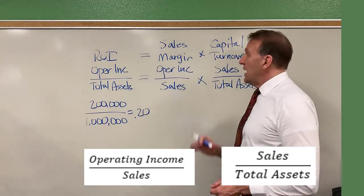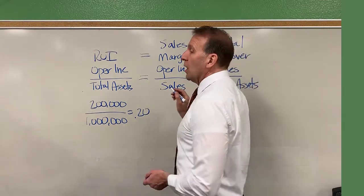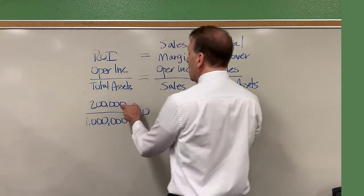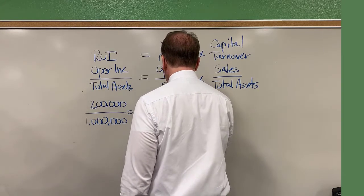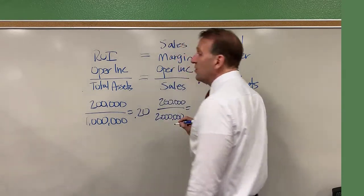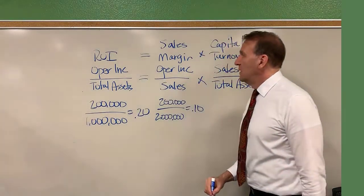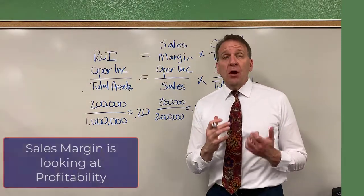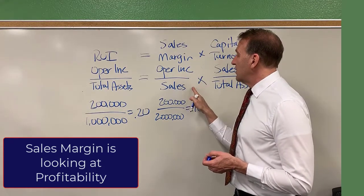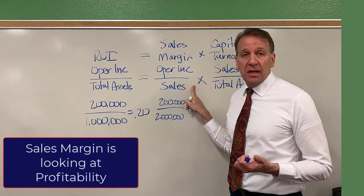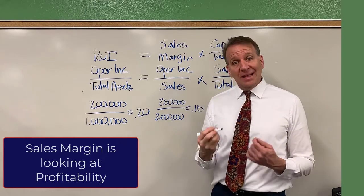Now let's plug some numbers in. Let's assume that our sales are $2 million and our operating income was $200,000. So $200,000 divided by $2 million gives us 0.1, or a 10% sales margin. This is looking at the profitability of the company — how good we are at generating operating income from sales. For every dollar in sales, we're generating 10 cents of operating income.